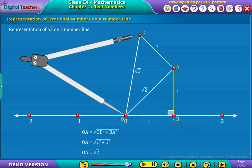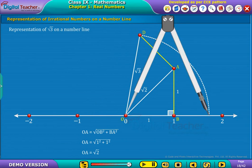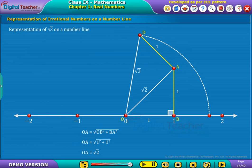Then, take OD as radius, that is, length of root 3, and construct a circle such that it meets the number line and mark the intersecting point C. So, the OC is also a radius of the circle, which is the representation of root 3.